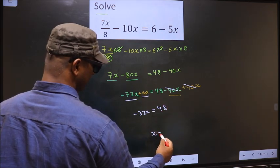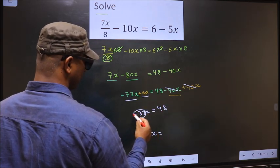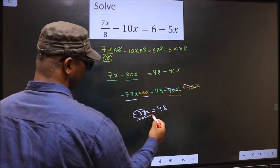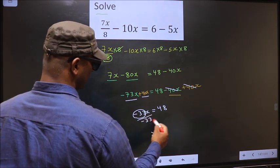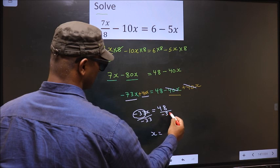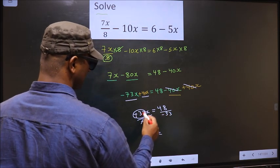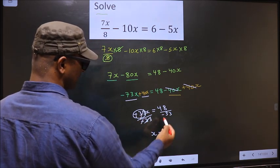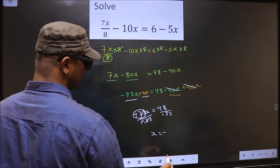Now to get x, we should remove minus 33. To remove minus 33, you divide by minus 33 on both sides. So now this cancels out, we get x, and the negative symbol I write at the top.